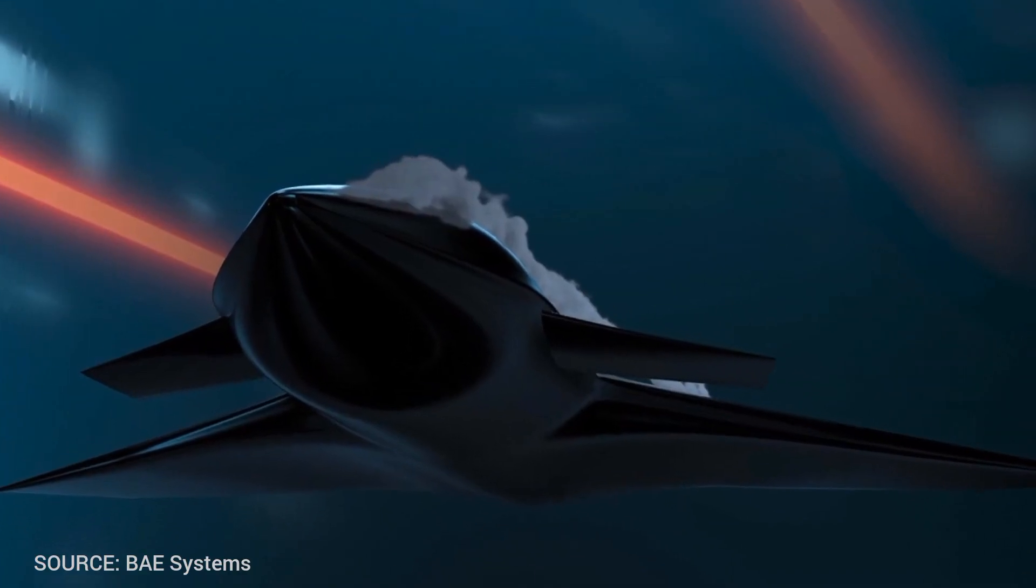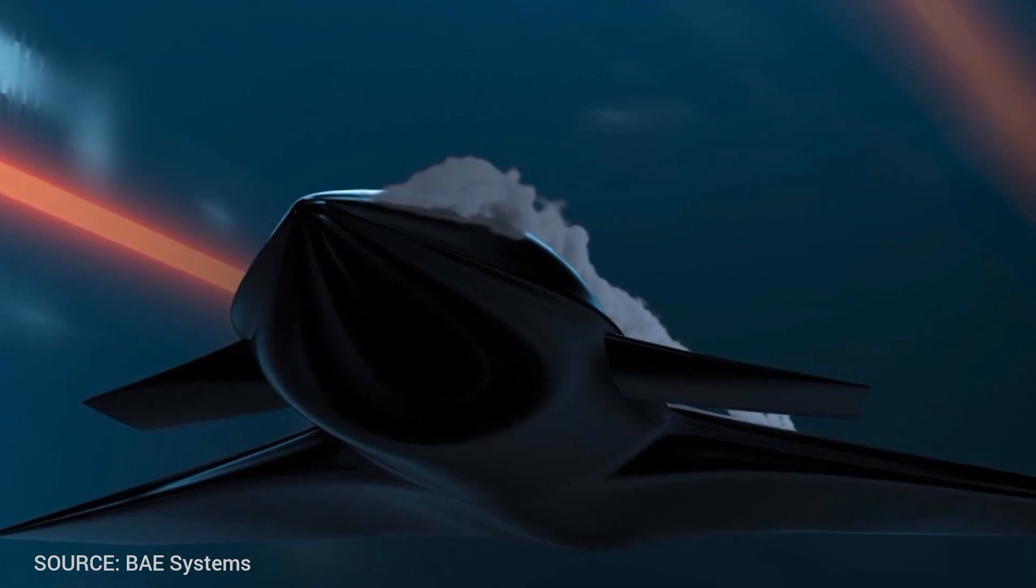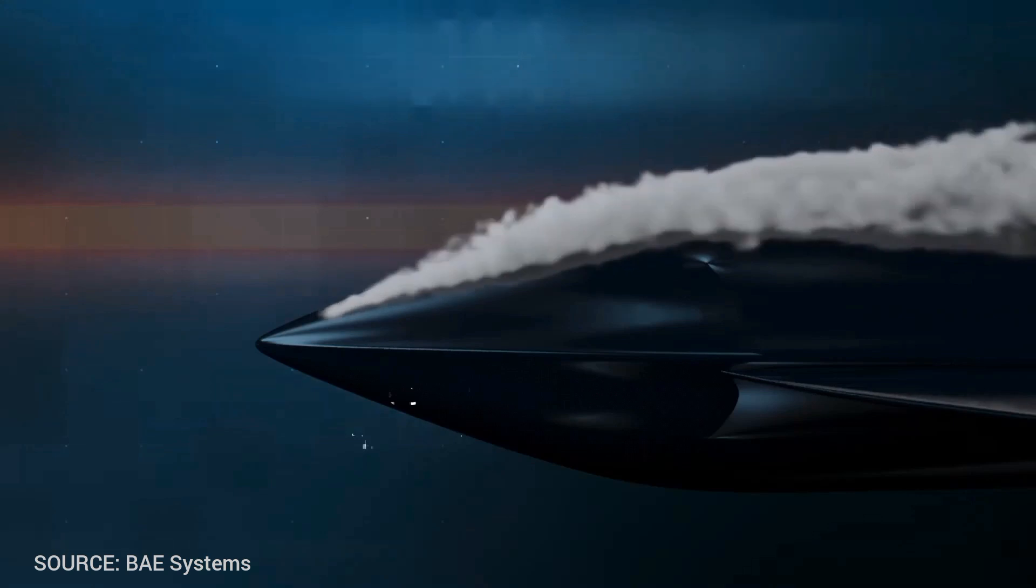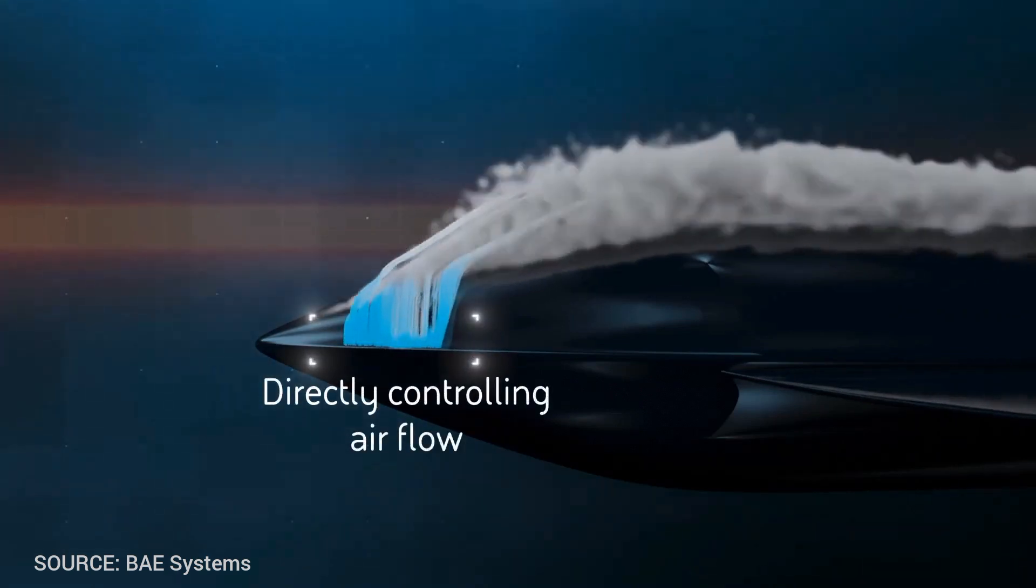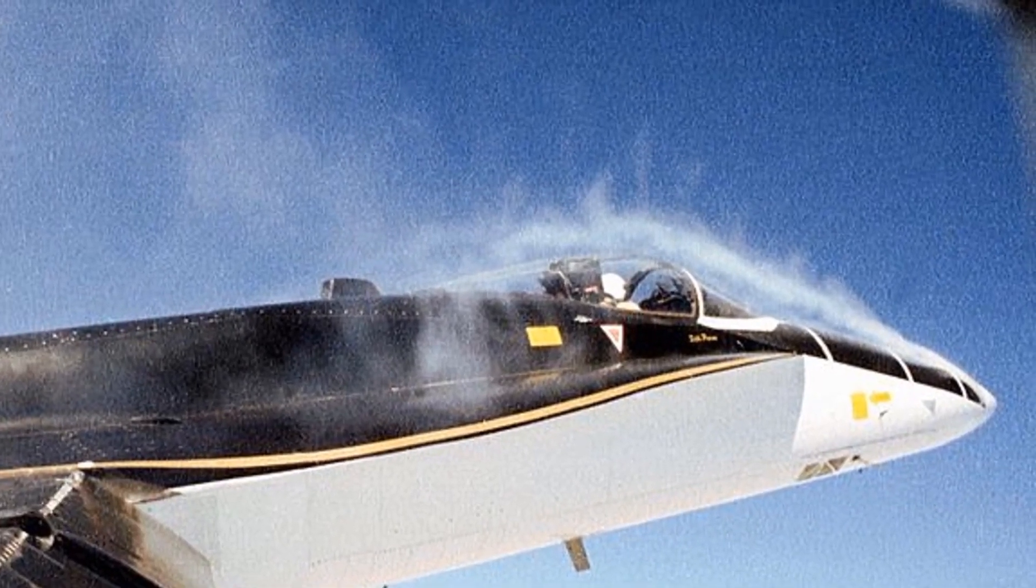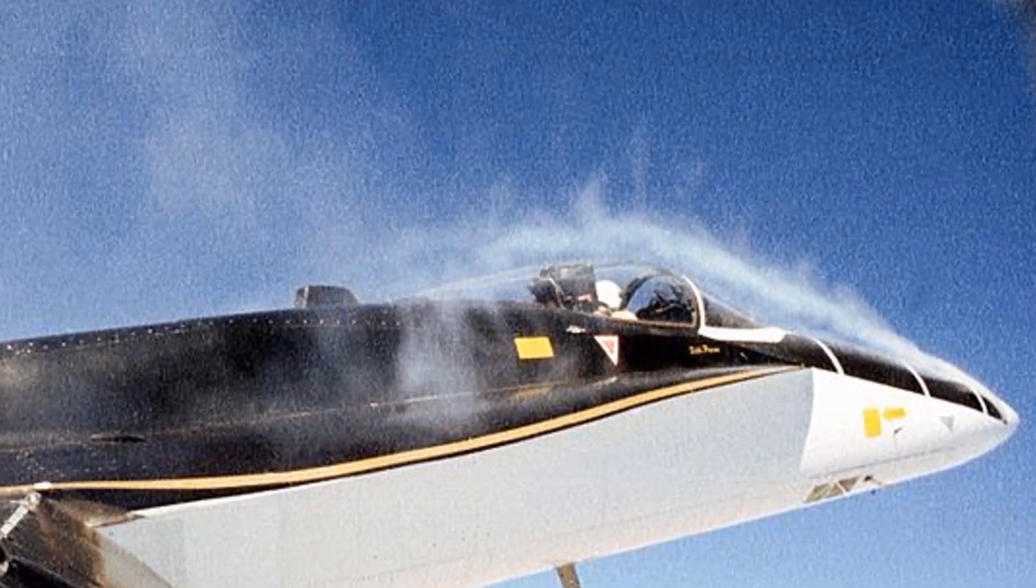It can even be used for what is called forebody blowing. In this, narrow slots are located around the edge of the aircraft nose and are used for blowing air jets. If air is blown through the slots, it changes the way the vortices form around the nose of the aircraft, thus changing the aerodynamics around it.